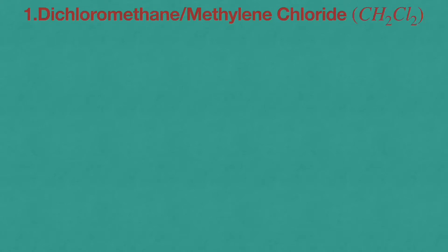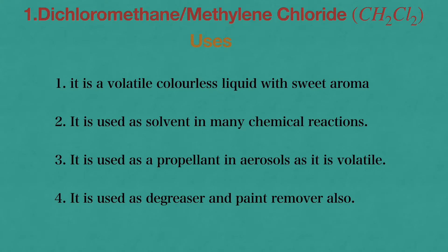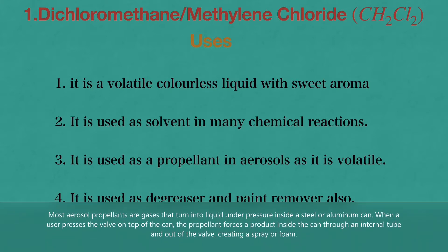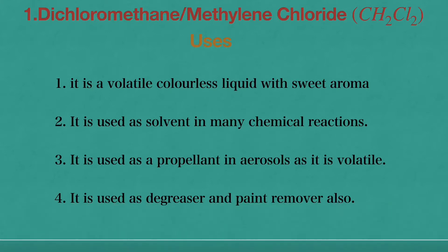Let us consider the first compound, dichloromethane or methylene chloride, and its uses. First, it is a volatile colorless liquid with a sweet aroma. Second, it is used as a solvent in many chemical reactions. Third, it is used as a propellant in aerosols as it is volatile. Fourth, it is used as a degreaser and paint remover.